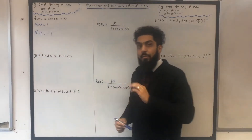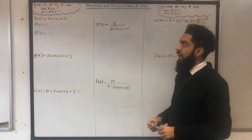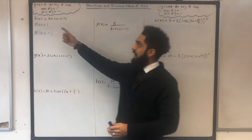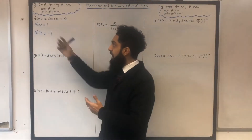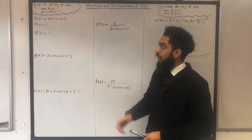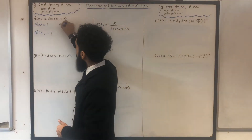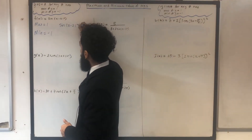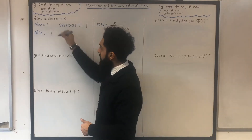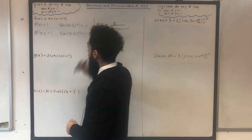In the exam, you could be asked to work out the smallest positive value of x for which the function f of x has a maximum (in this case 1) and a minimum (in this case minus 1). You have to solve the following equations: for the maximum, solve sine in bracket x minus 21 degrees equal to 1; for the minimum, solve sine in bracket x minus 21 degrees equal to minus 1.